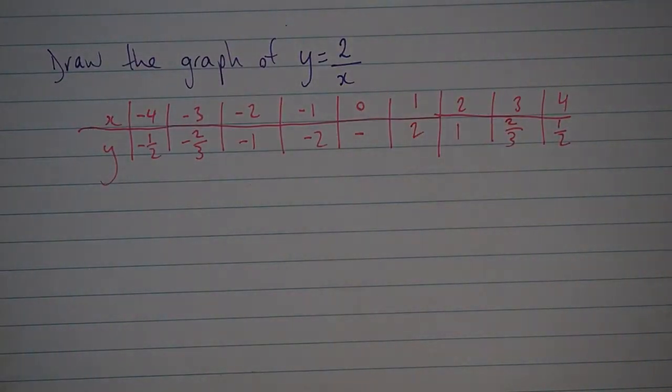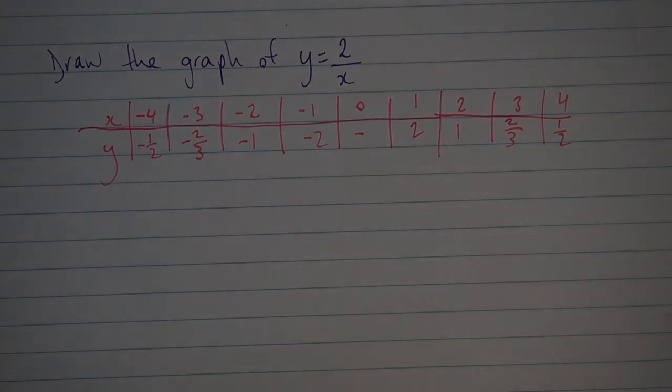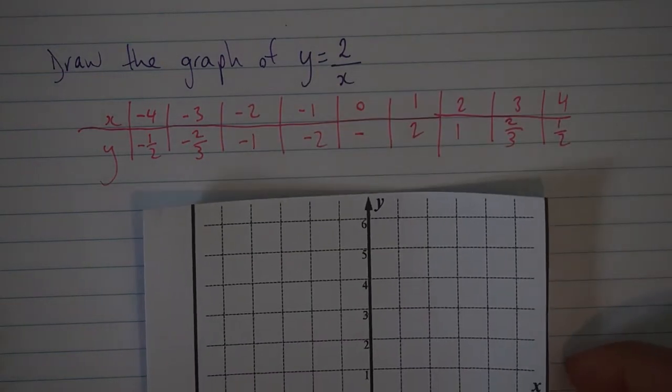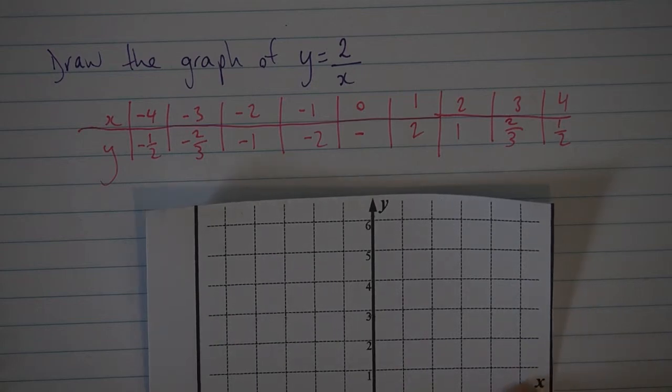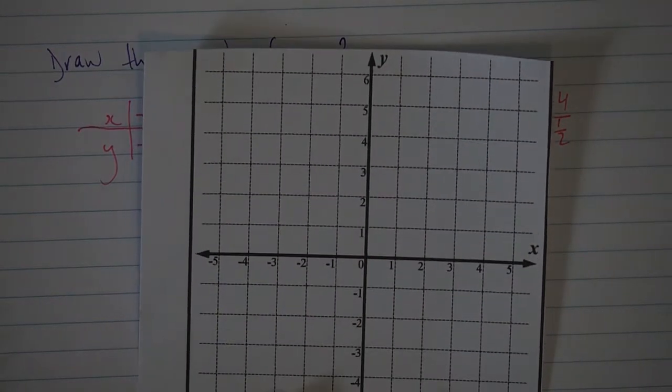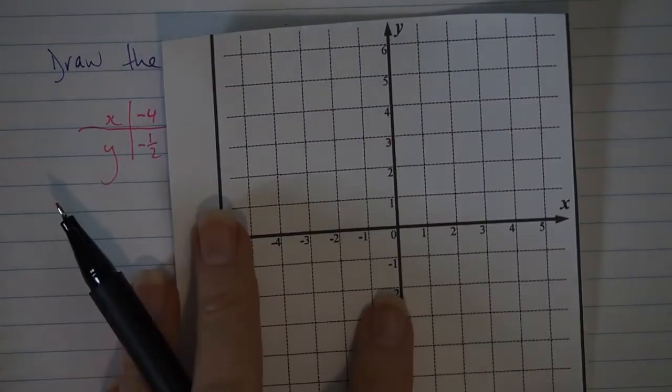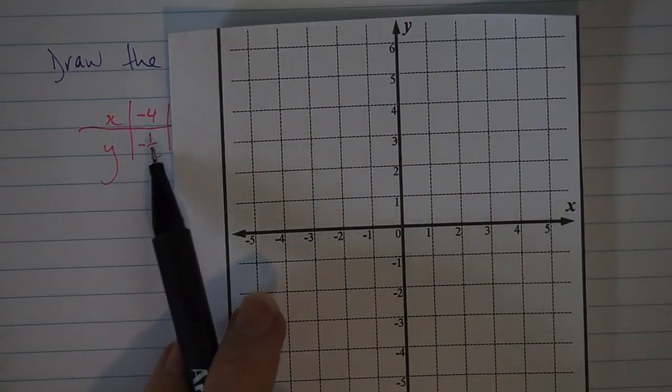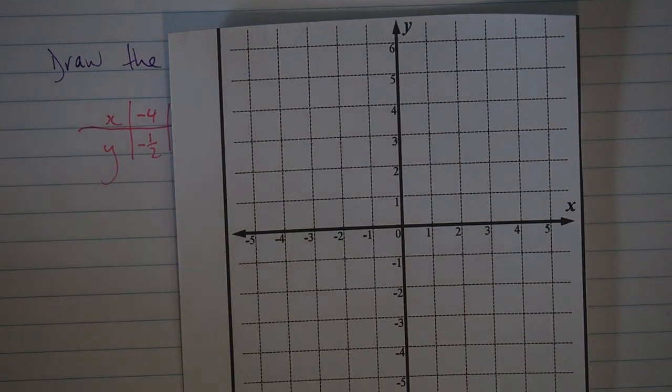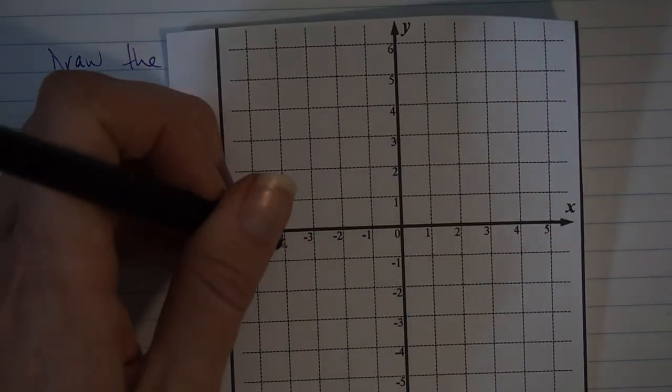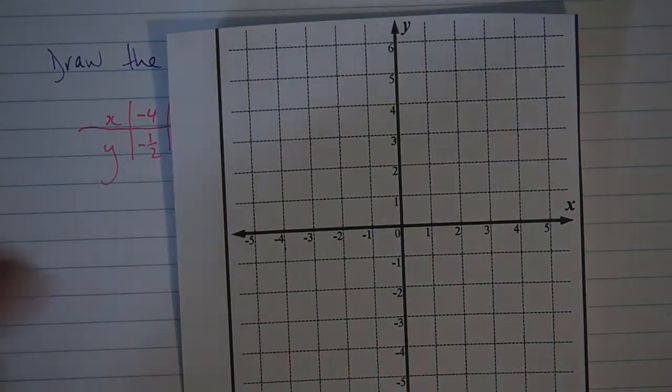Now we have our table of values. We have our pairs of coordinates that our graph will run through. So now I'm going to graph that. I will need to cover my table of values, but that's okay. My graph runs through negative 4, negative 1/2. There is a bit of estimation required here.